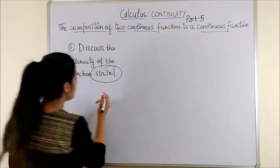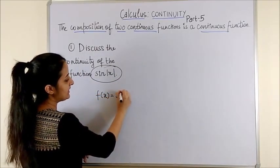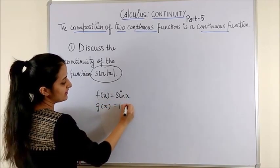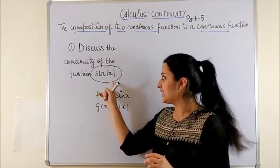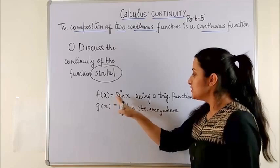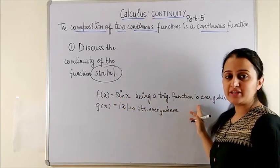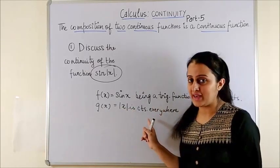For instance, your sin mod x has been made out of 2 functions, sin x and mod x. The composition for these has been taken to create your initial function. So, from our previous video, you would see sin x being a trigonometric function is everywhere continuous and so is modulus of x.